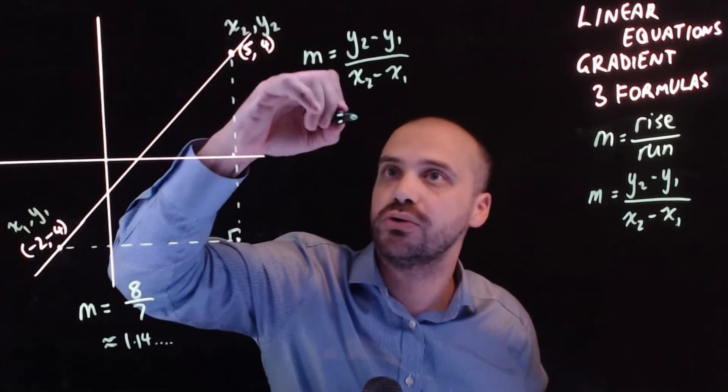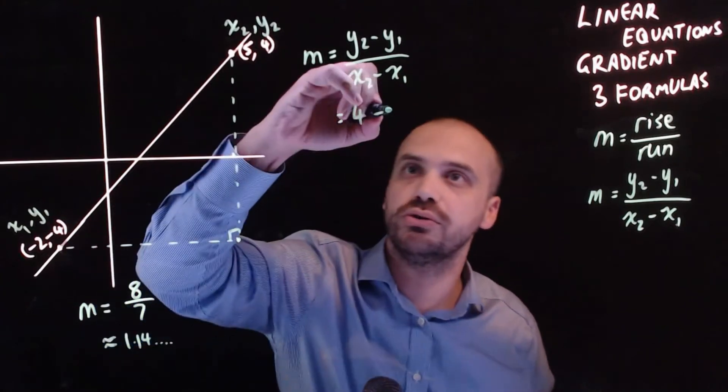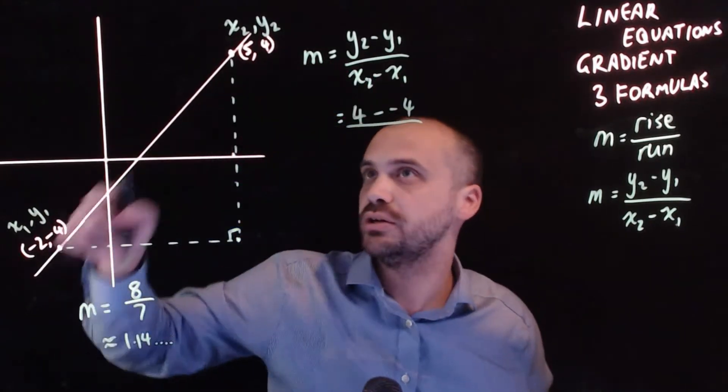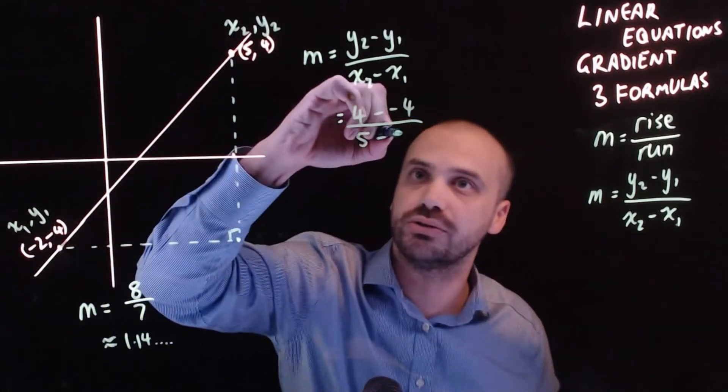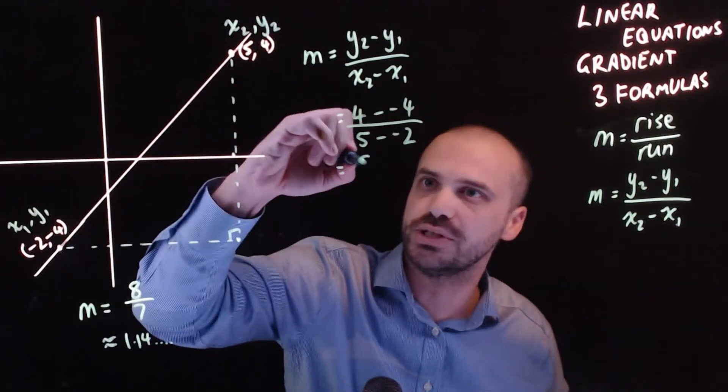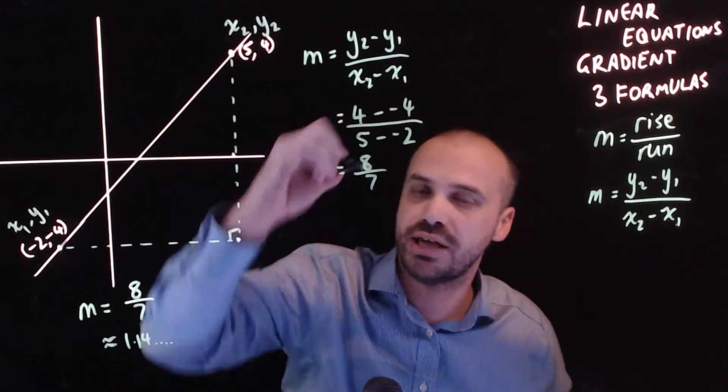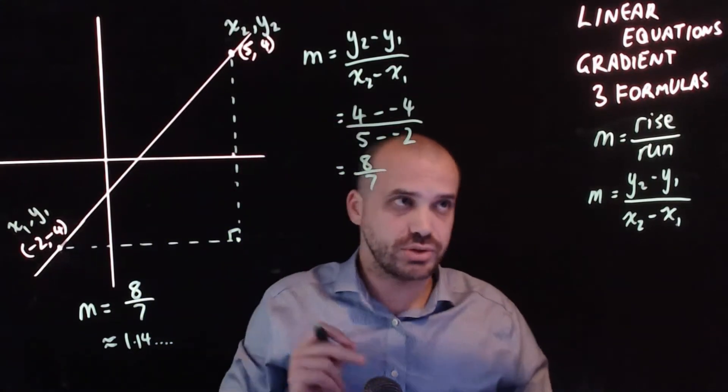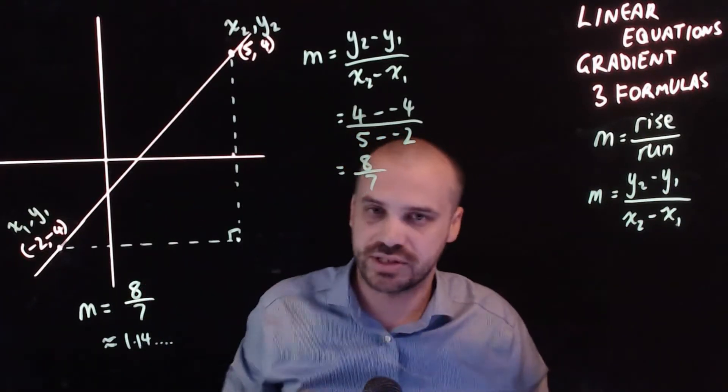y2 is 4, 4 minus minus 4, over x2 is 5 minus minus 2. Okay and we get 4 minus minus 4 which is 4 plus 4 which is 8 and we get 5 minus minus 2, 5 plus 2 which is 7. This should not be a surprise. We've got two formulas that calculate the gradient and they came to the same answer, 8 over 7.